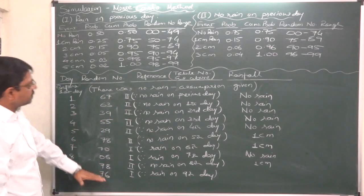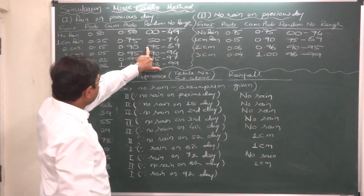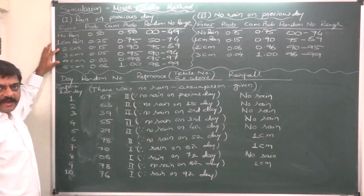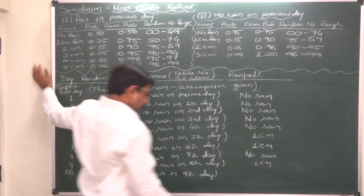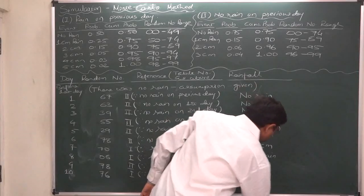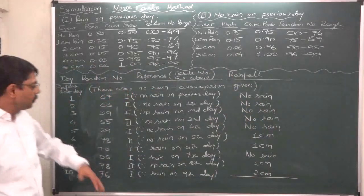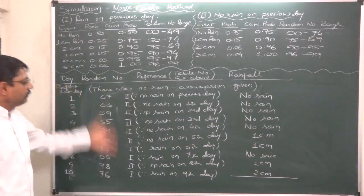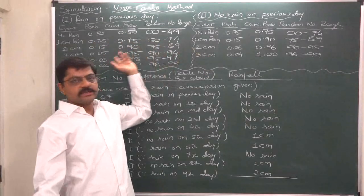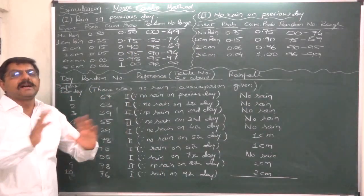For day 10, random number is 76, using distribution 1. It falls in range 75–89, which indicates 2 centimeters of rain. This completes the weather forecast for the next 10 days based on simulation, using the two probability distributions derived from past data.